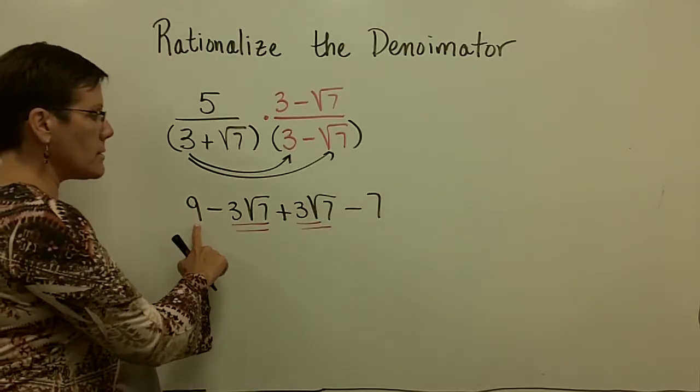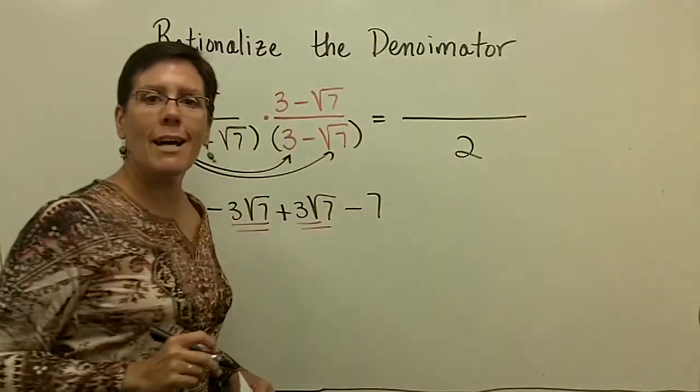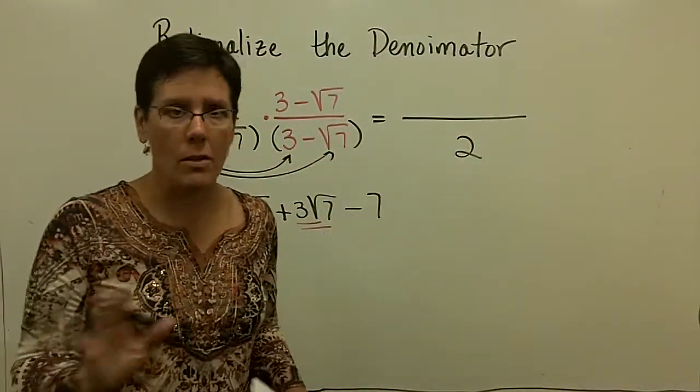And so I just get to take this 9 and that minus 7 and get a value of 2, and that's within my denominator. So I've gotten rid of the radicals in my basement. They're gone.